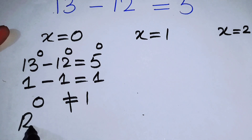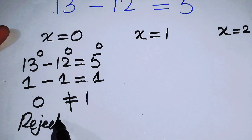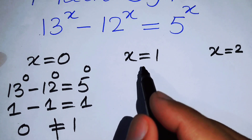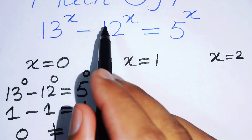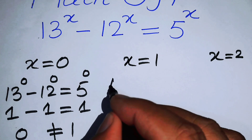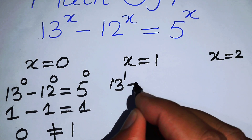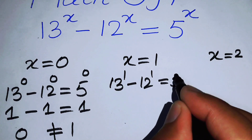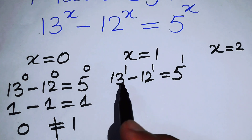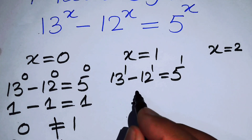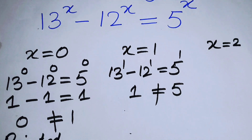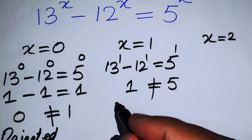So we reject x equal to 0. Similarly, we check x equal to 1. Putting x equal to 1 in the equation, it becomes 13 to the power of 1 minus 12 to the power of 1 equals 5 to the power of 1, that is 13 minus 12 equals 1, which should equal 5. This is again not possible, so we reject it.